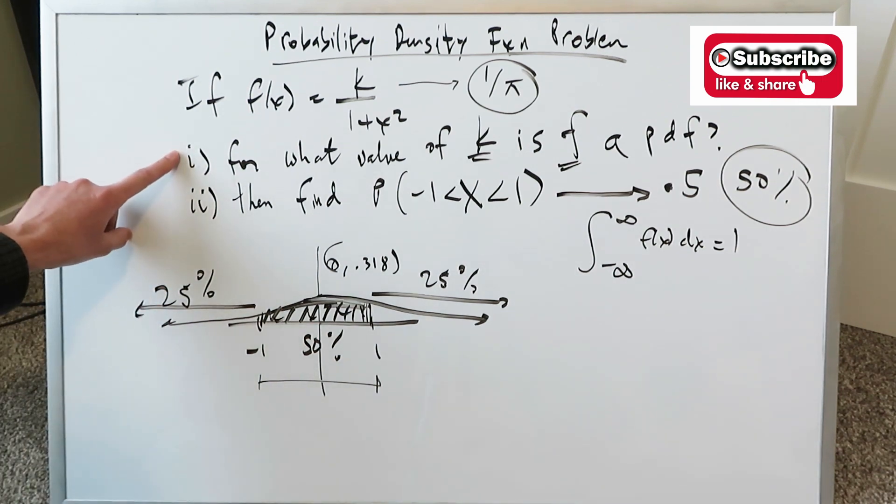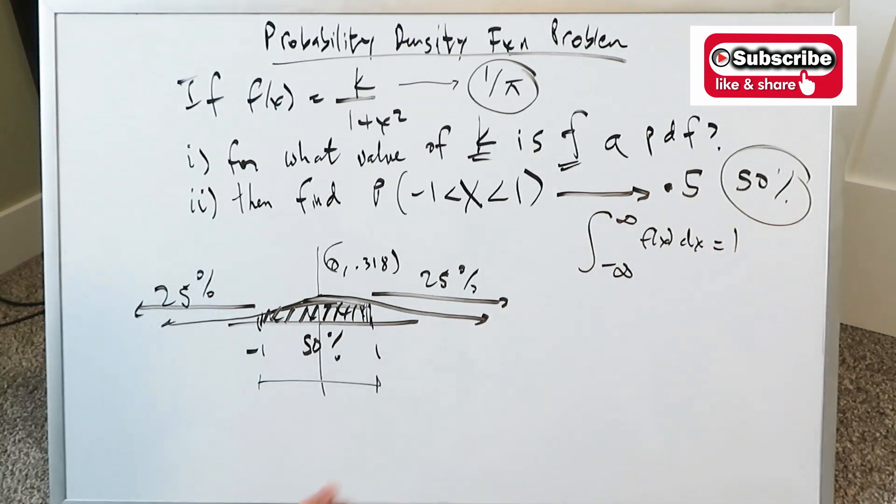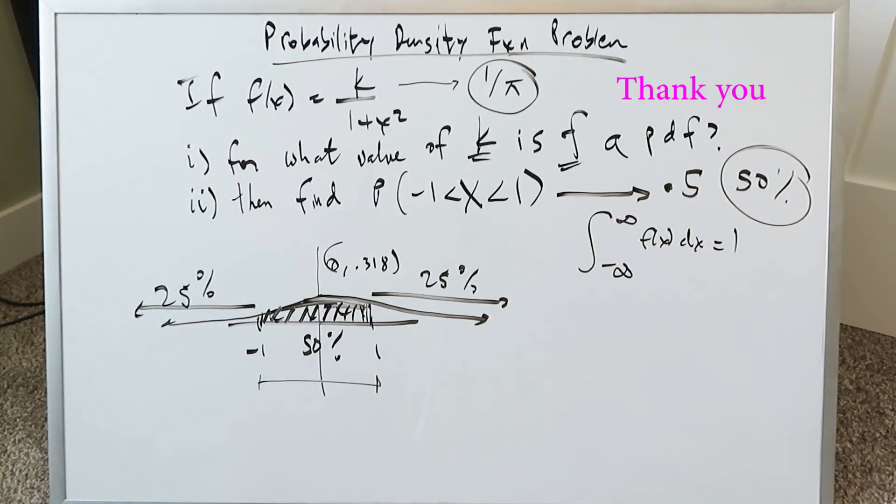But that right there is it. Question number one was value 1 over pi. Question number two, the part two, the probability was 50% or 0.5 and we're done. Thank you all. Have a great day. Have a great weekend. Bye.